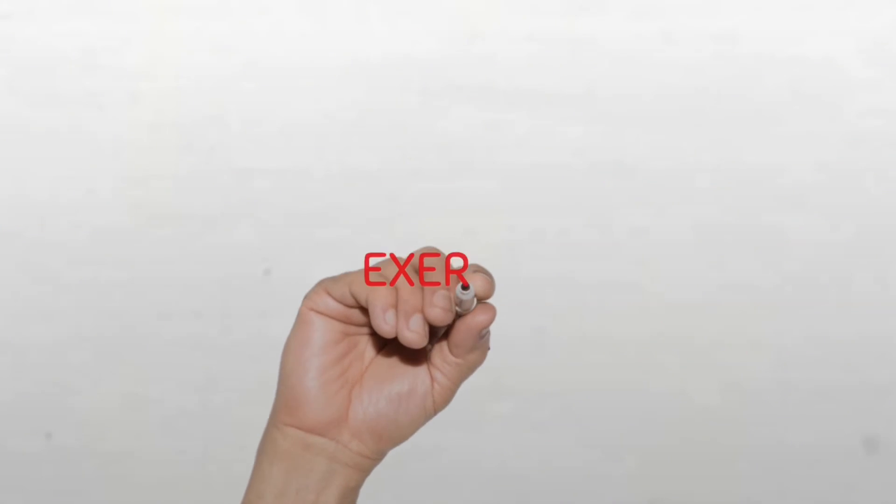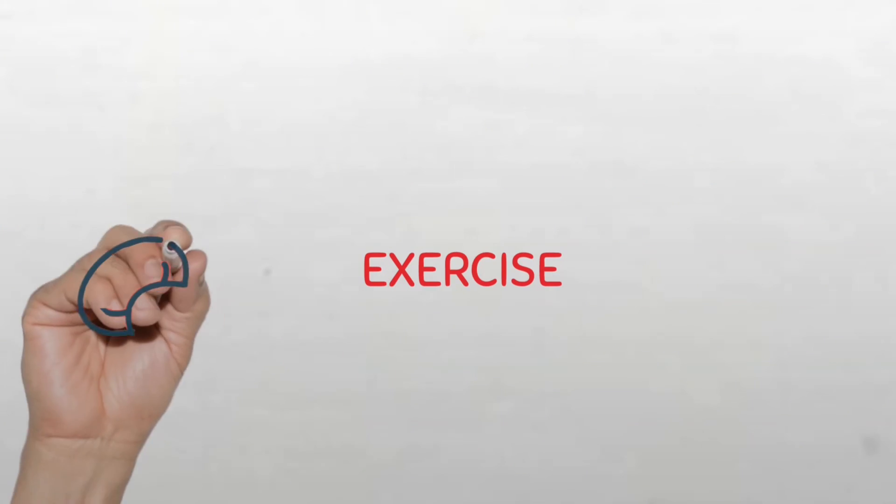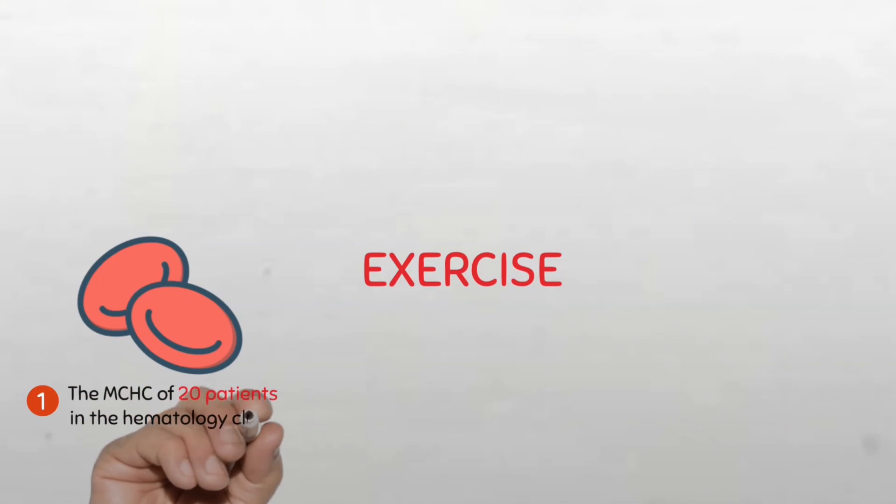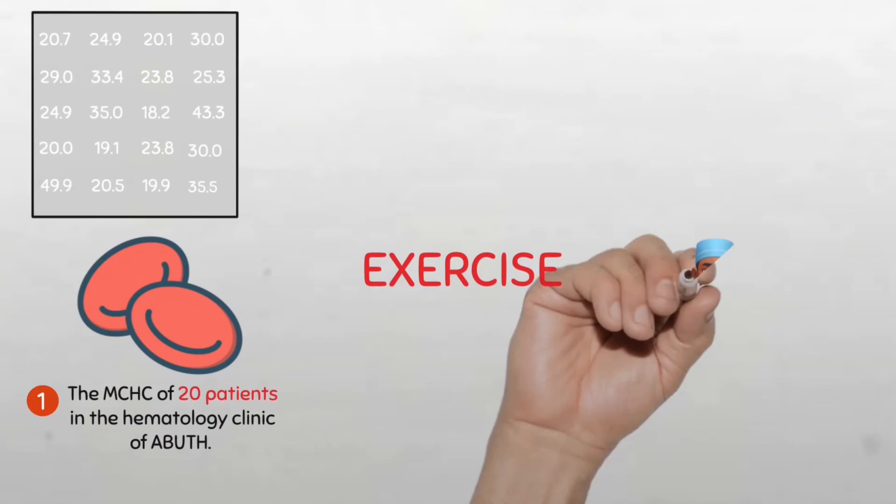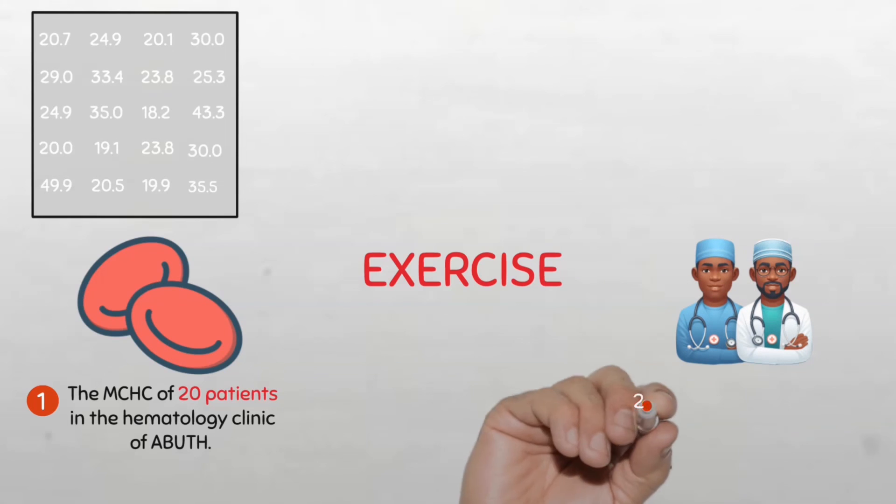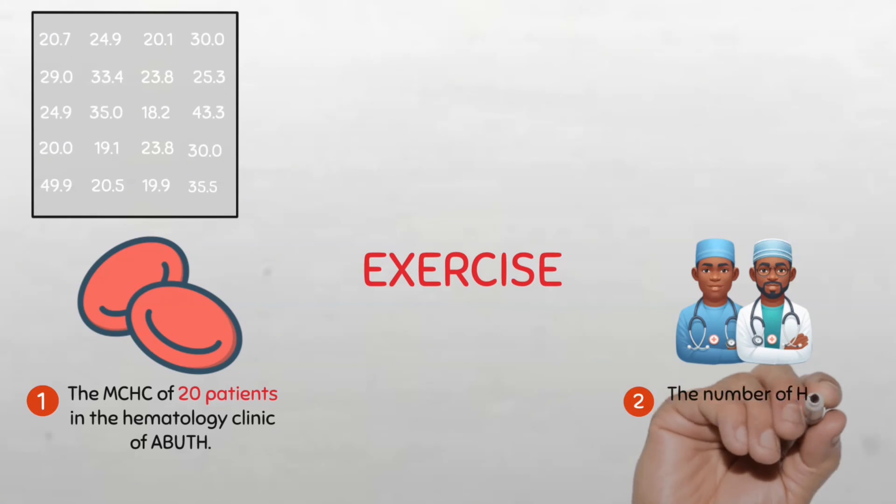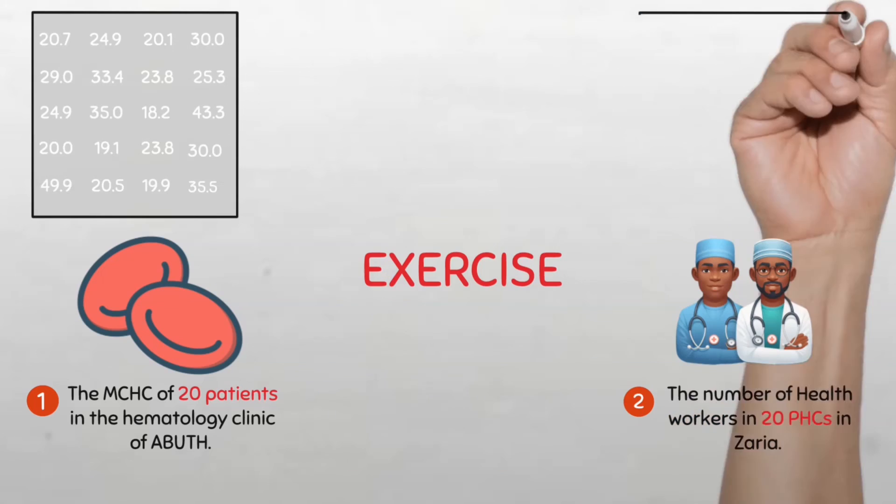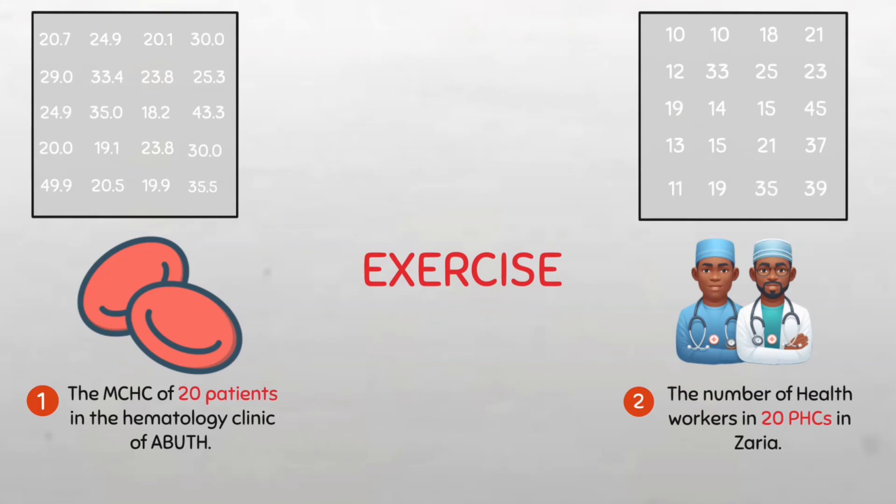Now it's time for you to answer a few questions. Which type of classification will you use for this data? One, the mean corpuscular hemoglobin concentration of 20 patients attending the hematology clinic. And two, the number of medical professionals in 20 primary healthcare centers in Zaria. Please put your responses in the comment section below and please do not ignore.